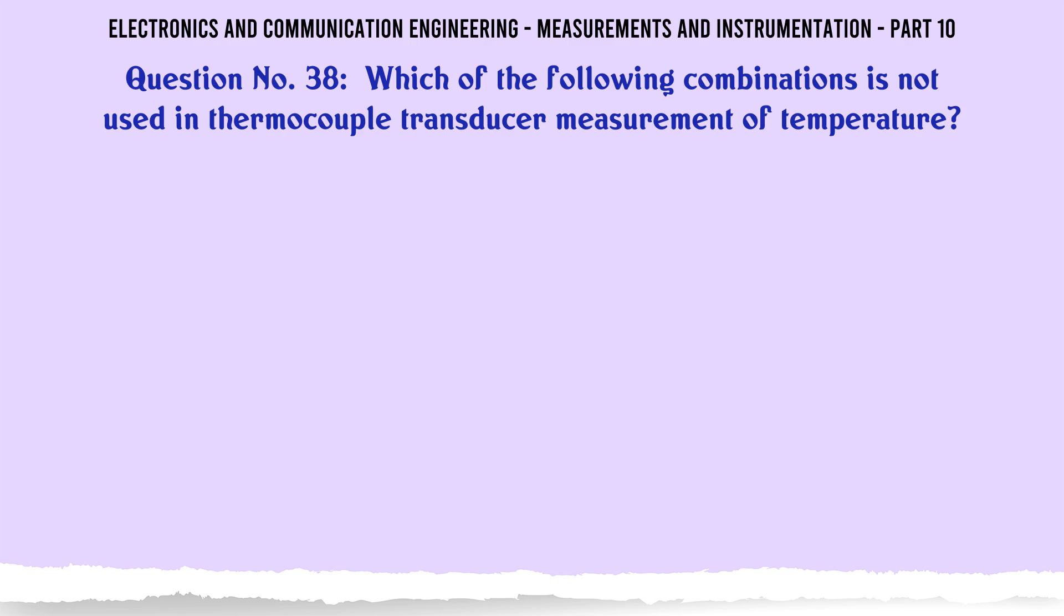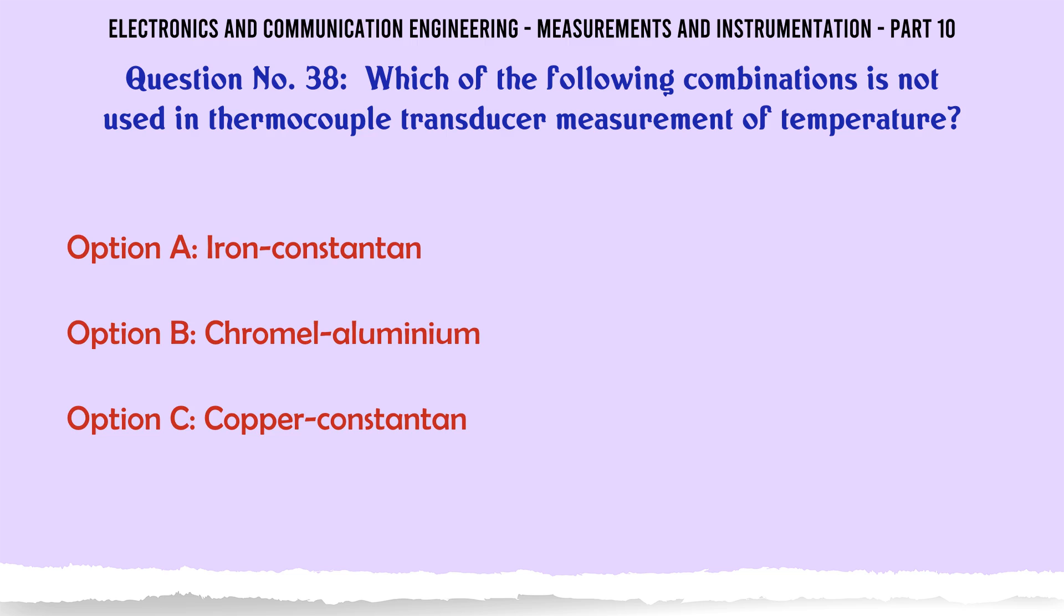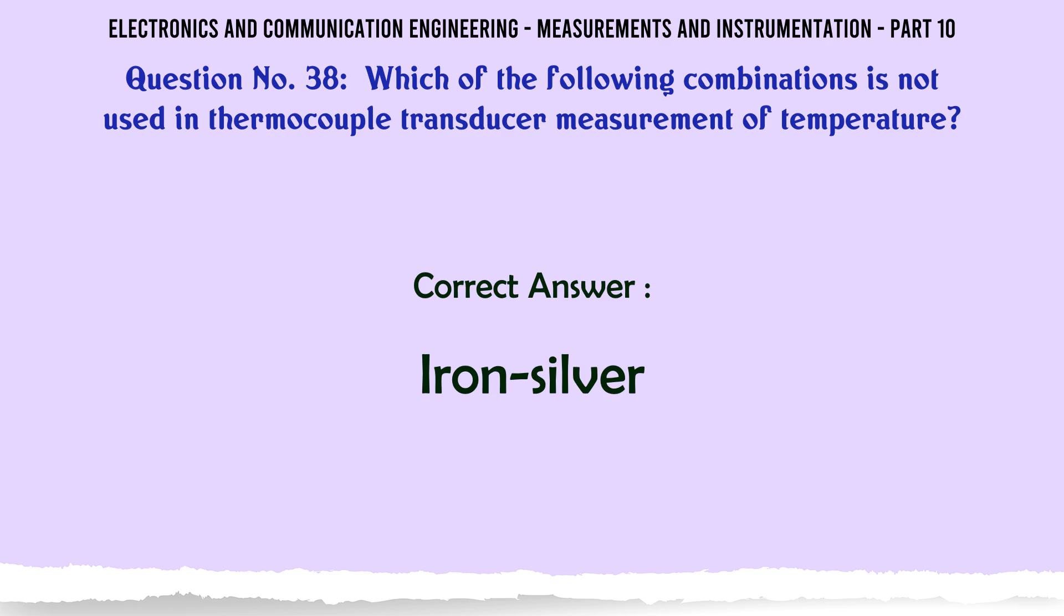Which of the following combinations is not used in thermocouple transducer measurement of temperature: A) iron constantan, B) chromel aluminum, C) copper constantan, D) iron silver. The correct answer is iron silver.